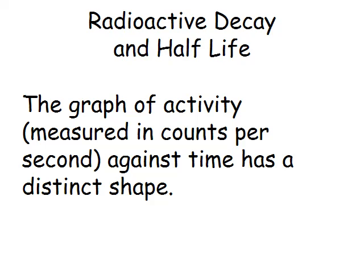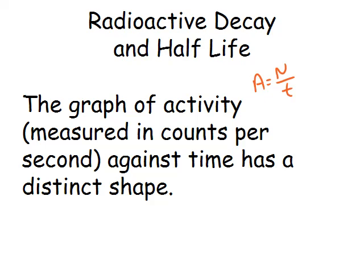A graph of activity, or counts per second, because activity is the number of decays divided by the time, or the counts divided by the time, has a particular shape. We can find the half-life of the radioactive source from this graph, but we need to remember to correct it for background radiation.